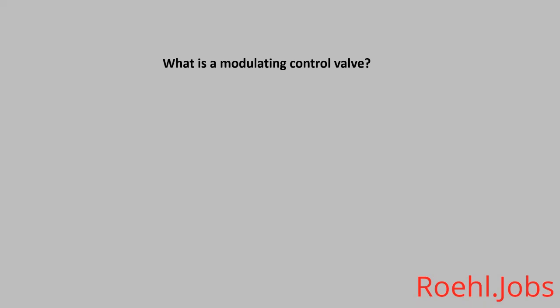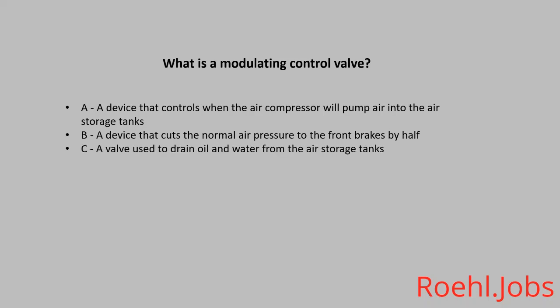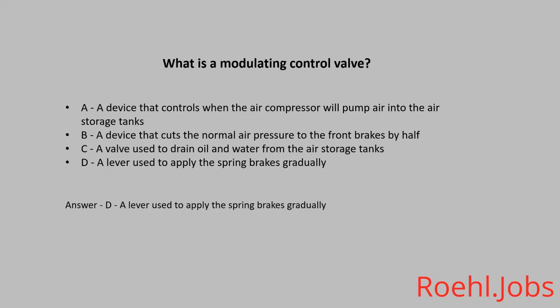What is a modulating control valve? A. A device that controls when the air pressure will pump air into the air storage tanks. B. A device that cuts the normal air pressure to the front brakes by half. C. A valve used to drain oil and water from the air storage tanks. D. A lever used to apply the spring brakes gradually. The answer: D, a lever used to apply the spring brakes gradually.